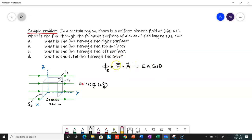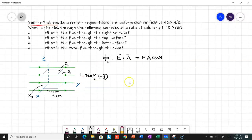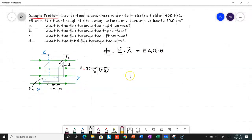Let's start with part A: what's the flux through the right surface? The right surface is this one, and the area vector or normal vector is the outward drawn normal.